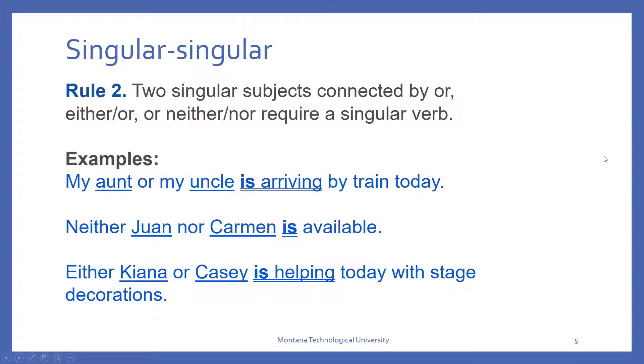When we have two singular subjects and we connect them by either or, neither nor, or just plain or, it takes a singular verb. Aunt or uncle is, one nor Carmen is, Kiana or Casey is, all singular connected by that or. And see here we use the correlative conjunction correctly, neither nor, either or.